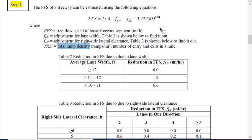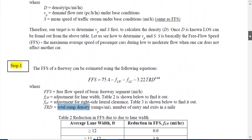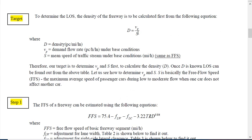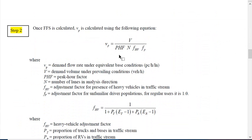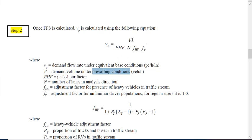Once you find ramp density, lateral clearance, and lane width factors, you can calculate the free flow speed. Now let us look at VP — demand under base condition. The equation for VP uses V, which is our current demand under prevailing condition. In real life, maintaining ideal base condition is not always possible, so we convert V using adjustment factors.